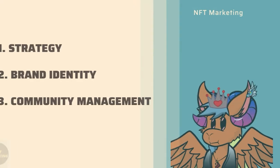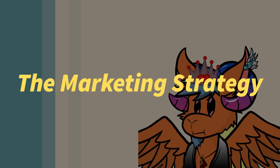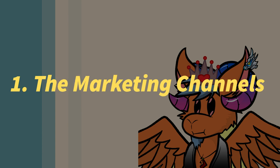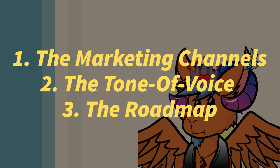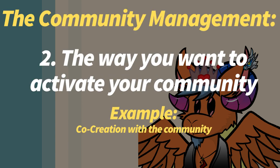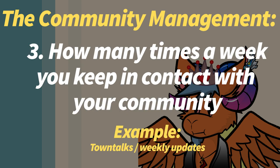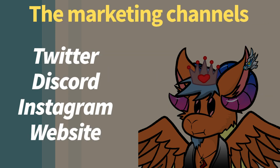Major factors are the strategy, brand identity, and community management. In order to create a marketing strategy, you can think of the following aspects: the channels you will use, the tone of voice, the roadmap, the way you engage with your community, the way you want to activate your community, and how many times a week you keep in contact with your community. I'll explain every aspect in this video.